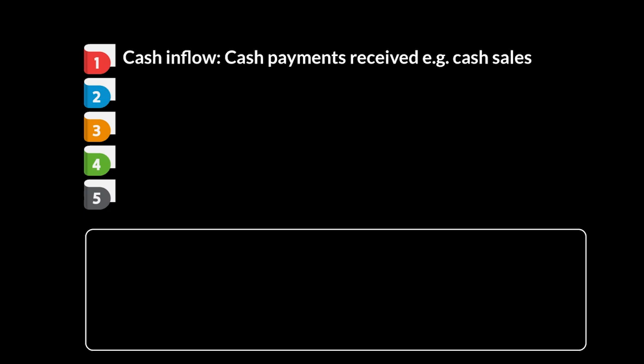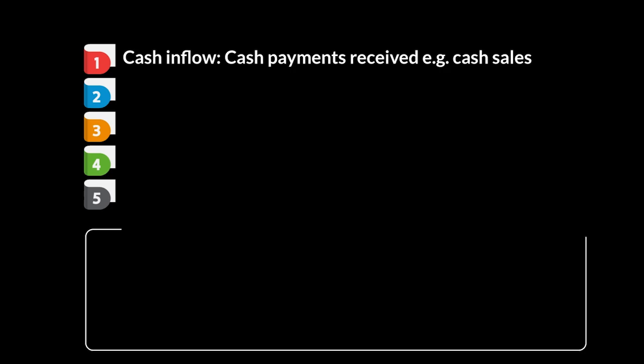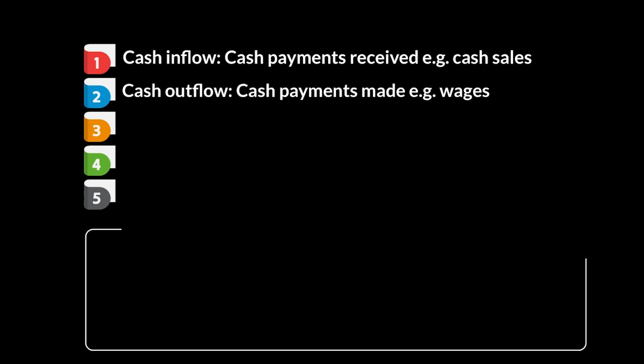Looking at number one, the first of these concepts is called cash inflows. It's all the cash payments that are received by a business, so that comes in the form of cash sales for example. Then there's your cash outflows — these are all the cash payments that are made by a business in a certain period, so when they pay wages, when they pay their bills, they will obviously be paying in cash.